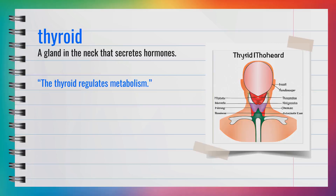The word thyroid, spelled T-H-Y-R-O-I-D, is a noun. The thyroid is a gland in the neck that secretes hormones. For example, the thyroid regulates metabolism. In summary, the thyroid is a crucial gland in the neck.